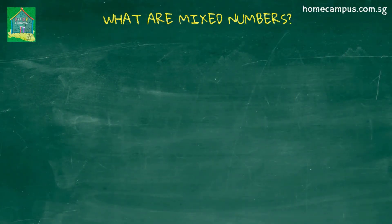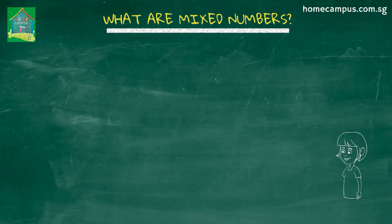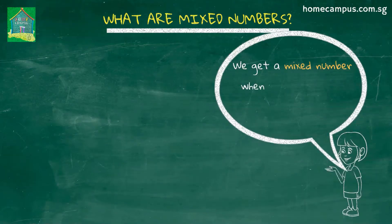So, what are mixed numbers? A mixed number is what we get when we add a whole number and a fraction.